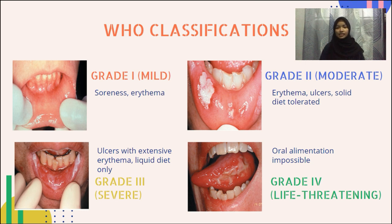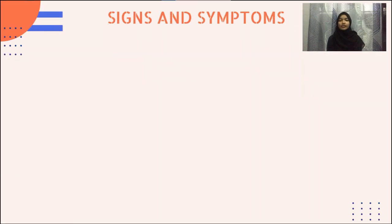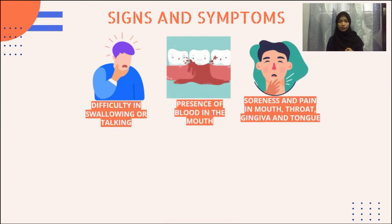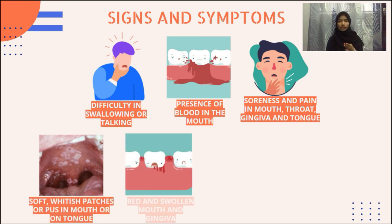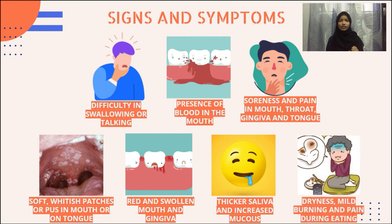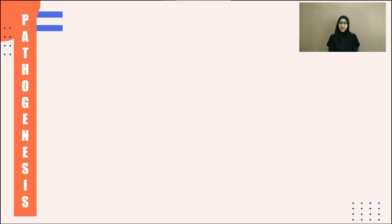Grade 3 mucositis is considered severe because the ulcers come with extensive erythema and the patient can merely consume liquid diet. Meanwhile, grade 4 mucositis, where oral nutrition becomes impossible, is considered life-threatening. The signs and symptoms of oral mucositis include difficulty swallowing or talking, red and swollen mouth and gingiva, blood in the mouth, soreness and pain in the mouth, throat, gingiva and tongue, feeling of dryness, burning or pain during eating, soft white patches or pus in the mouth or on the tongue, and thicker saliva with increased mucus in the oral cavity.